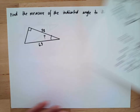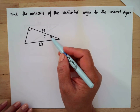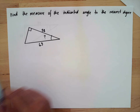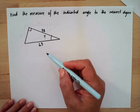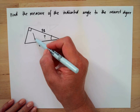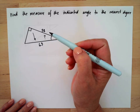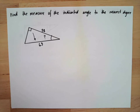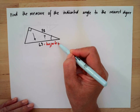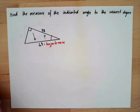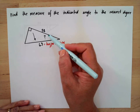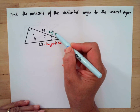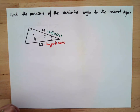Another problem: this is our reference angle. The first thing we do is identify the parts of the triangle. Opposite the 90-degree angle is the hypotenuse. The side beside the reference angle is the adjacent, and the side away from the reference angle is the opposite.